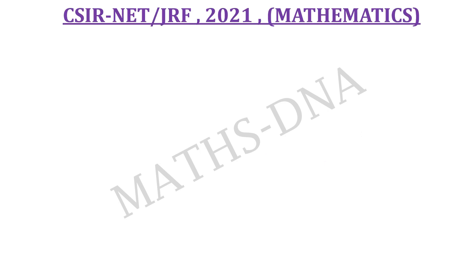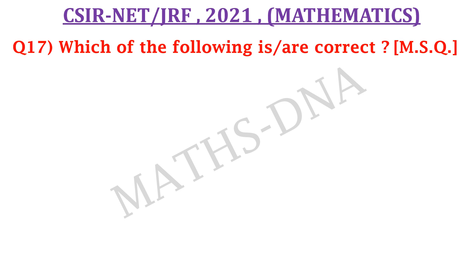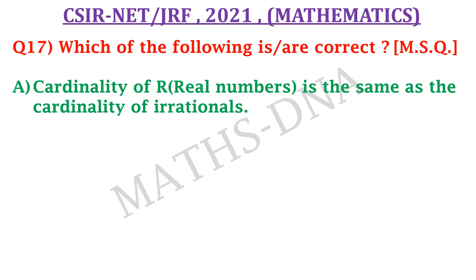Moving on to the question, the question is, which of the following is or are correct? And this is a multiple selective question. So here, more than one option may be correct. The options are, A, cardinality of R, that is, real numbers, is same as the cardinality of irrational numbers.